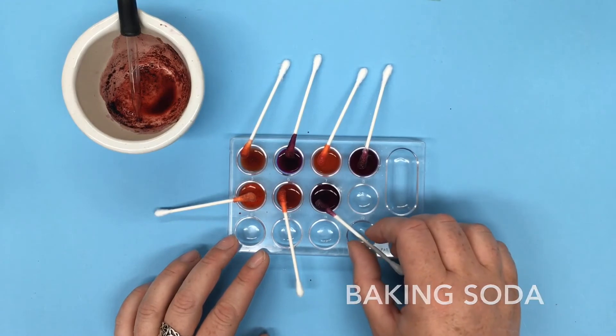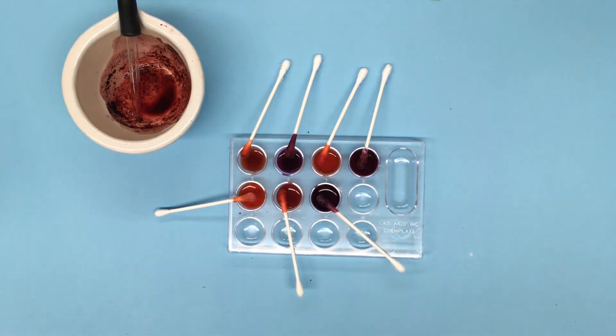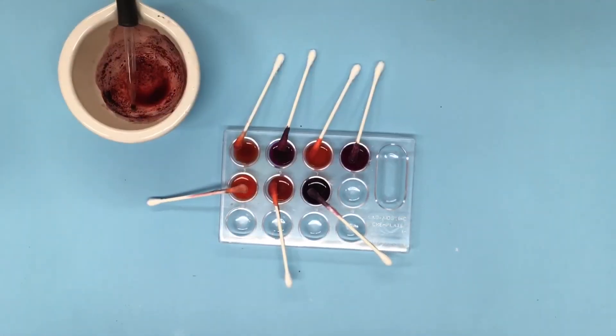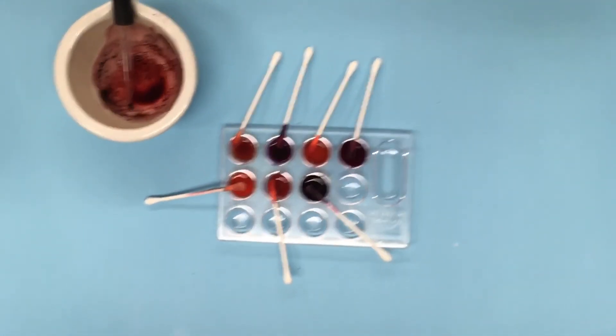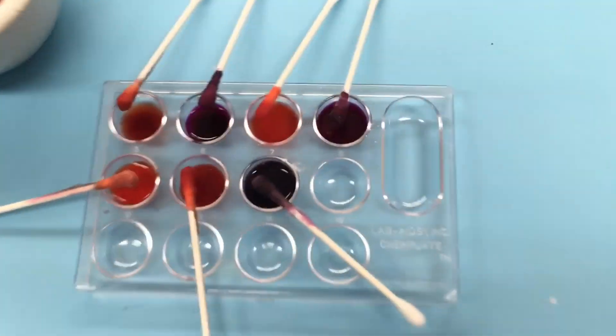So we can see that we're getting a variety of different colors just by changing the pH of the carminic acid in these bugs. And these can be used in fabrics, in food dyes, in all sorts of different materials. Okay let's just zoom in a little bit closer and take a closer look at those colors.